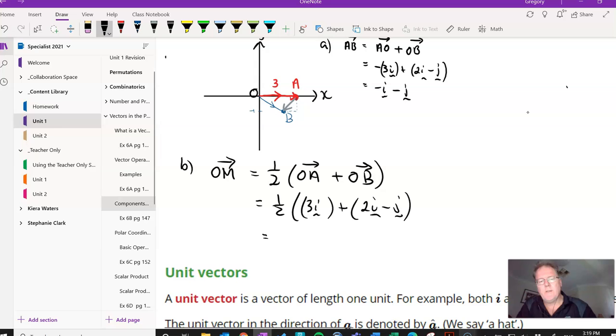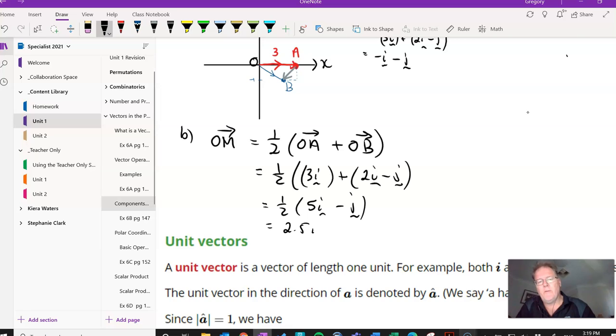So quickly do that sum, half, 3I plus 2I is 5I and minus J. And just quickly, it's going to be 2.5I minus 0.5J. And that would be how we find the midpoint.